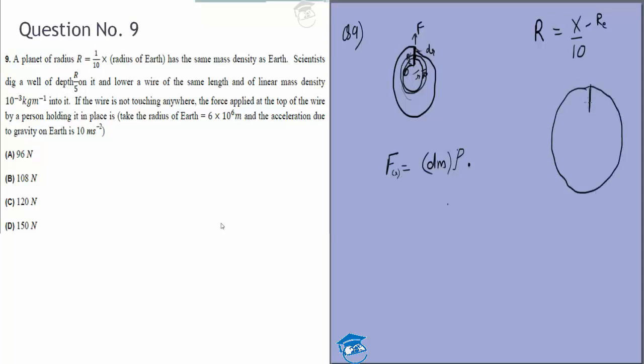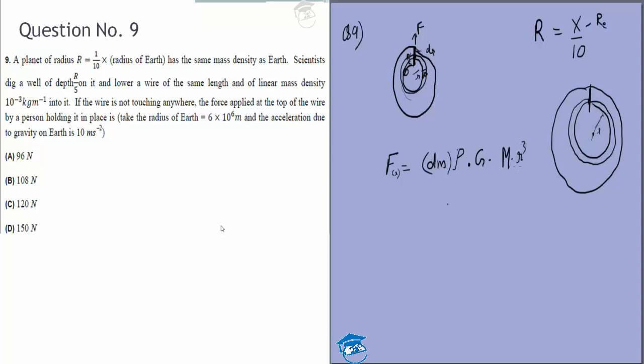I will try to draw a better figure because I think that is important. This is r by 5, this is dr, and this hole is r. So everything within this region will contribute.